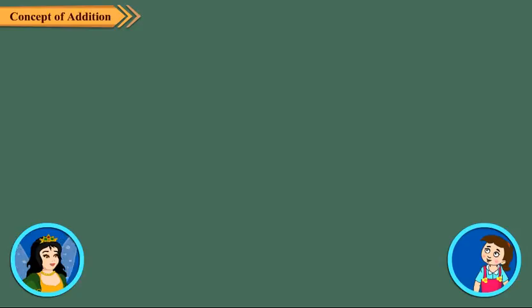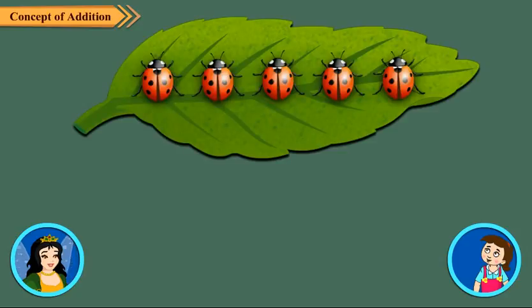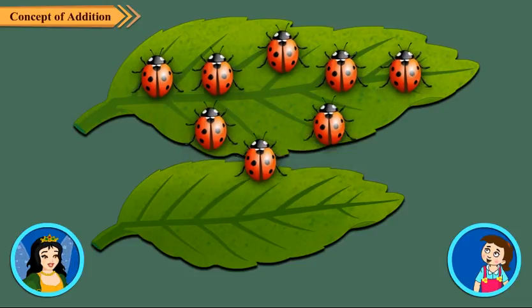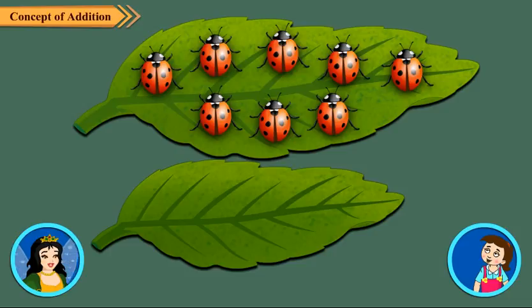Now let's look at another example. There are five ladybirds on one leaf and three ladybirds on another leaf. Now tell me, how many ladybirds are there in all? Let us put together and add. Hmm, there are eight ladybirds in all.